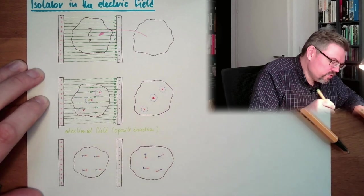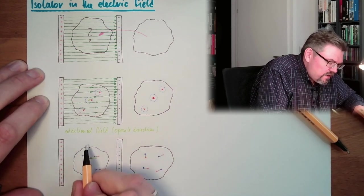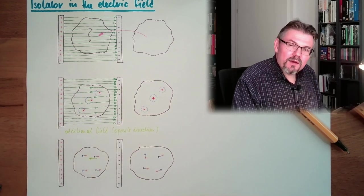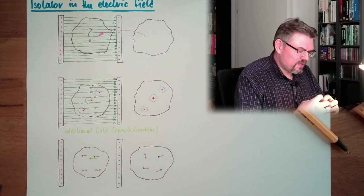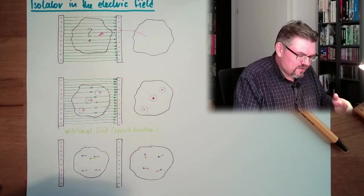Because of the outer field, the dipoles are turning each other in field direction. And also here, we have an additional field. An additional field like here also, in this direction. This time, this works even better because the dipoles are usually bigger. It's working better.